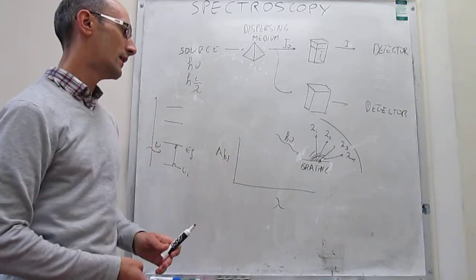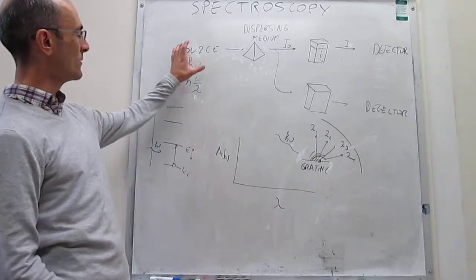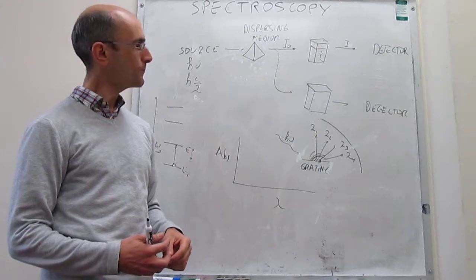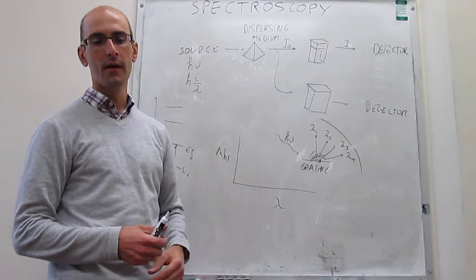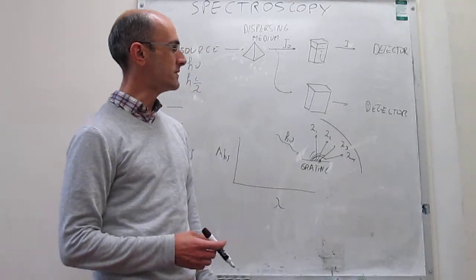So that's the way diffraction gratings work in modern spectrometers. So we've explained already what the source is, the dispersion medium which allows you to separate the various wavelengths, and then finally we have to talk about the detectors.